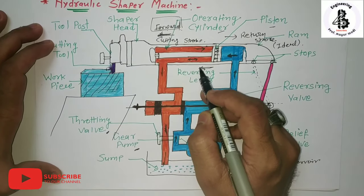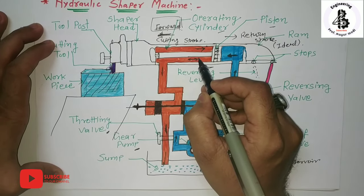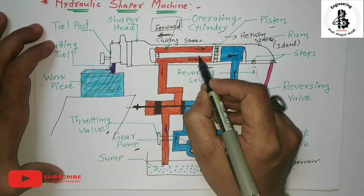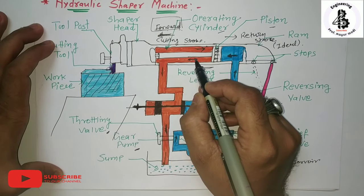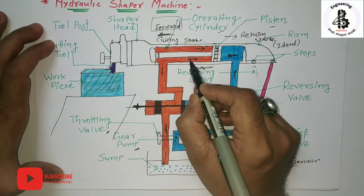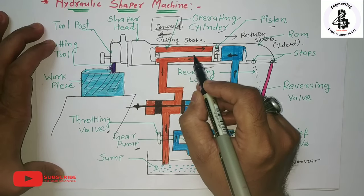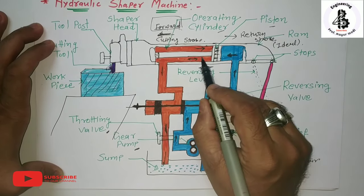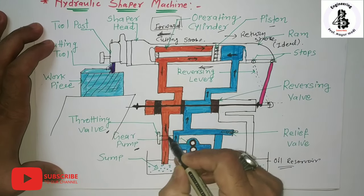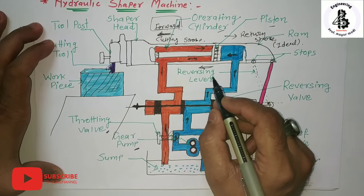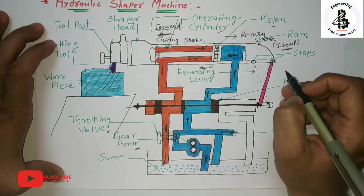The quick return mechanism works because the stroke volume on the left side of the cylinder is smaller, due to the presence of the piston rod. Since the pump is a constant discharge type, the left side of the cylinder requires less time to fill with oil than the right side, making the return stroke quicker than the forward stroke. The length and position of the stroke can be adjusted by changing the position of the stops, and the cutting speed can be adjusted by controlling the throttling valve.